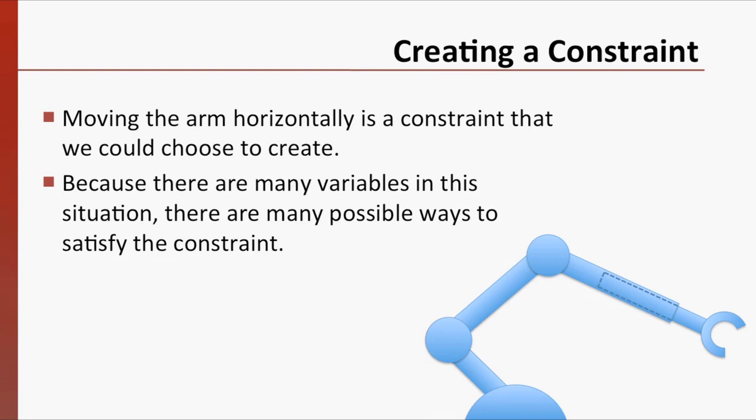Now, we have an opportunity to describe a constraint in a complex situation. We could choose, for example, to constrain the motion of the arm to just the horizontal direction. Because there are so many variables in this situation, there are many possible ways to satisfy the constraint.